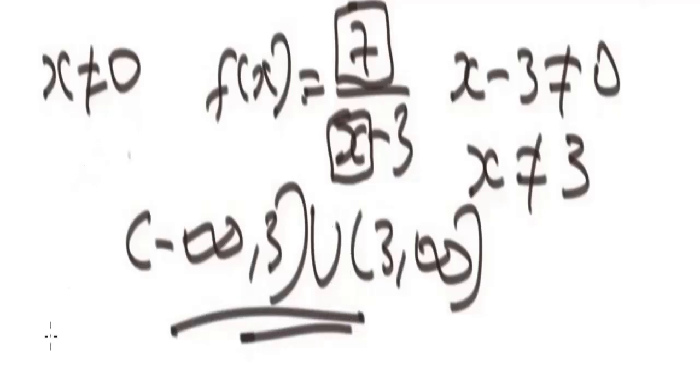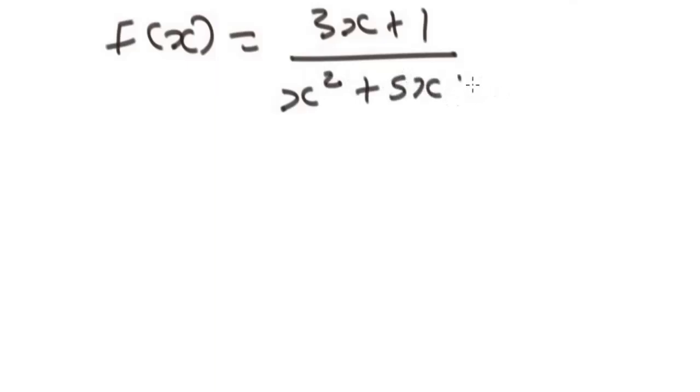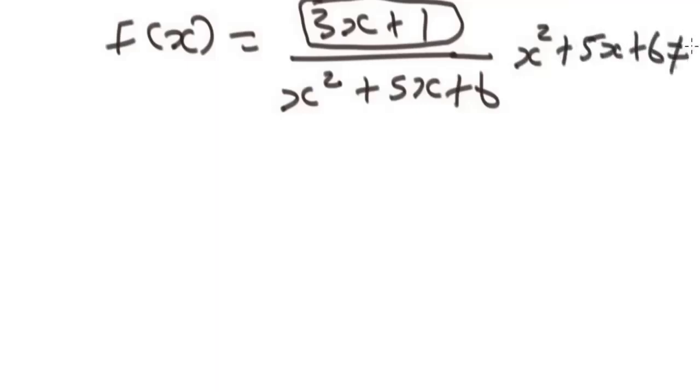Now let's do one more example. We are given f of x equals three x plus one over x squared plus five x plus six. I ask you to find the domain of this function. Remember, now consider the denominator. So this is going to be x squared plus five x plus six is not equal to zero.